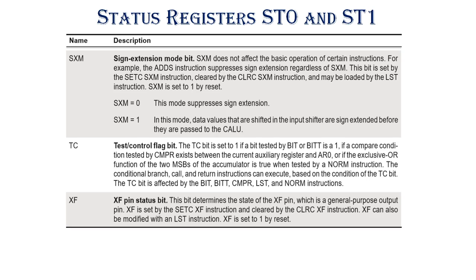SXM is the sign extension mode bit. When SXM is 0, it suppresses sign extension. When SXM is 1, data values shifted in the input shifter are sign extended before they are passed to the CILU.